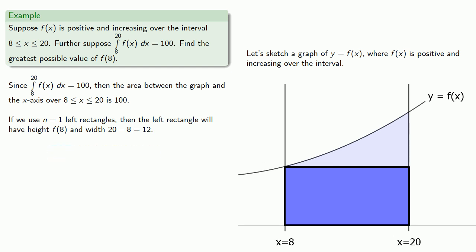And since f of x is increasing, the area of this rectangle will be less than the actual area under the curve, and so we know that f of 8 times 12 is less than 100, and so we know that f of 8 is less than 100 twelfths.